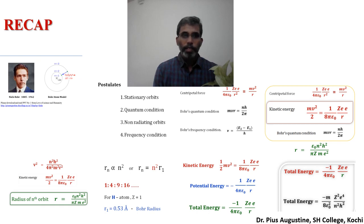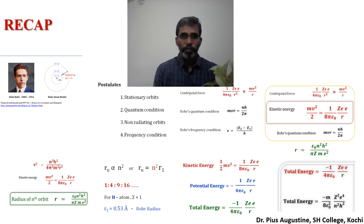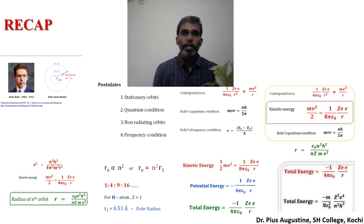Then the frequency condition: when electrons move from a higher orbit to a lower orbit, the atom radiates the difference in energy as hν, where h is Planck's constant and ν specifies the frequency of the radiation. Hence the wavelength of the emitted radiation is λ = c/ν. We will continue with this concept to obtain the expression for frequency or wavelength of the radiation emitted from a hydrogen atom.